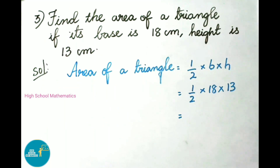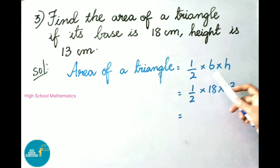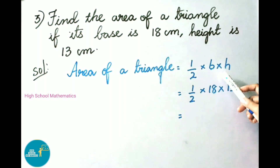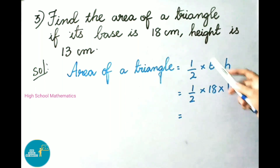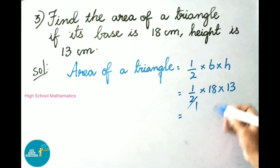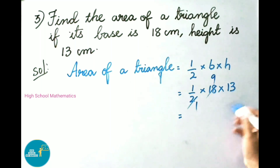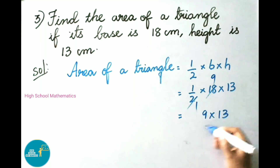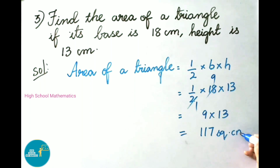Question number 3: find the area of a triangle if its base is 18 cm and height is 13 cm. Area of a triangle equals half into base into height, that is half into 18 into 13. Simplifying: half of 18 is 9, and 9 multiplied by 13 is 117. Therefore, area of the triangle is 117 cm².